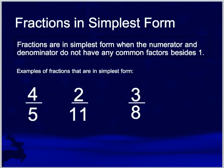I had mentioned fractions in simplest form before. You might want to pause the video and copy down this definition. Simplest form of a fraction: fractions are in simplest form when the numerator and denominator do not have any common factors besides one. Examples of fractions in simplest form: four-fifths, two-elevenths, three-eighths — all of those fractions are in simplest form.